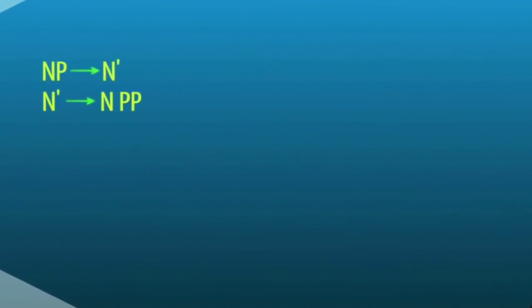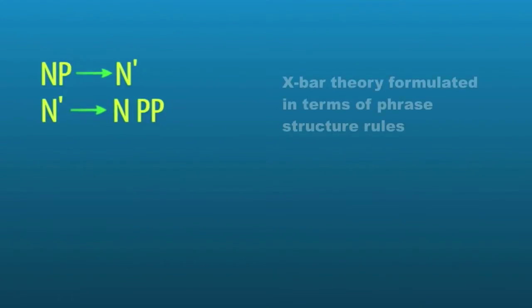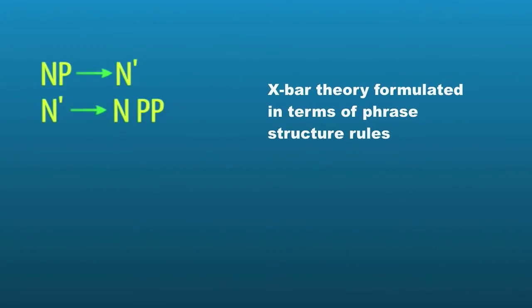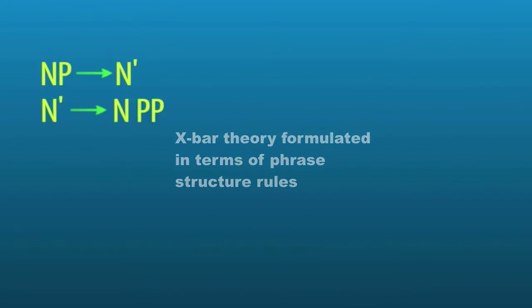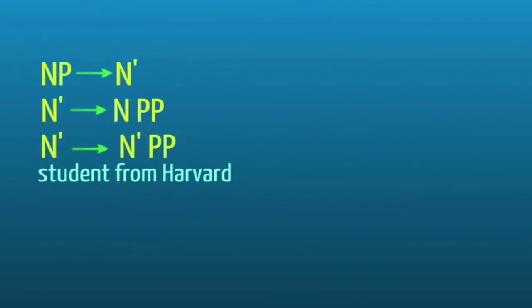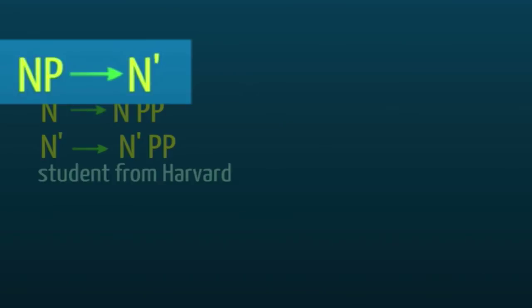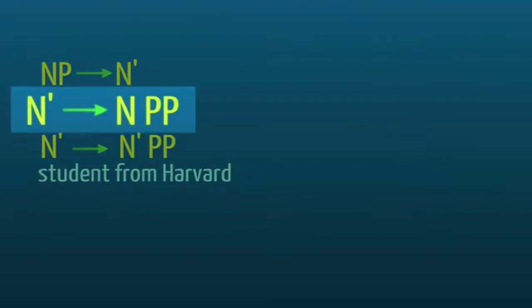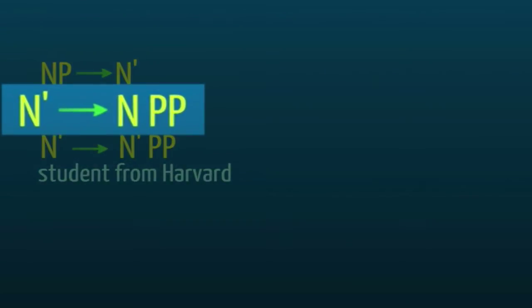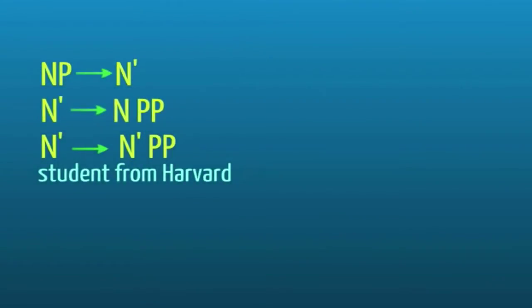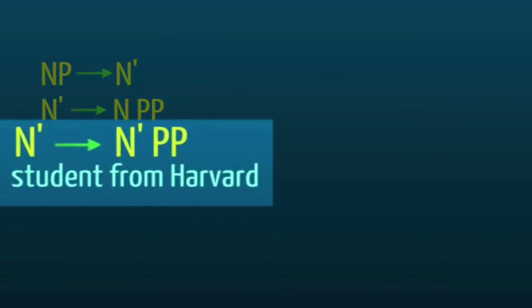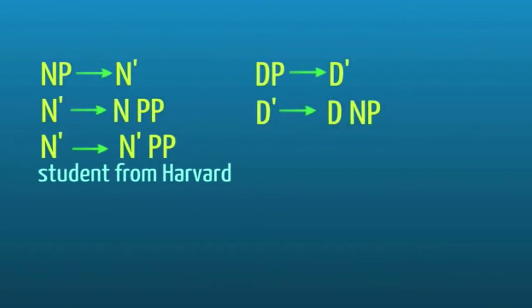So if we look across the different phrase types and we give them this kind of phrase structure rule, the same phrase structure rules or the same kind of phrase structure rules are instantiated across the entire range of lexical categories. So an NP consists of an N bar. An N bar can consist of an N followed by a PP or an N bar followed by another N bar and a PP in order to give us an adjunct of the head noun. So student from Harvard, for example.